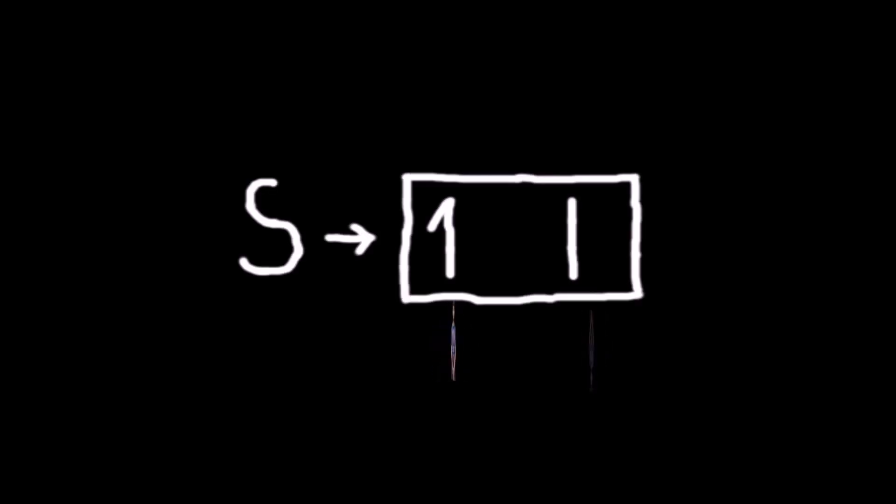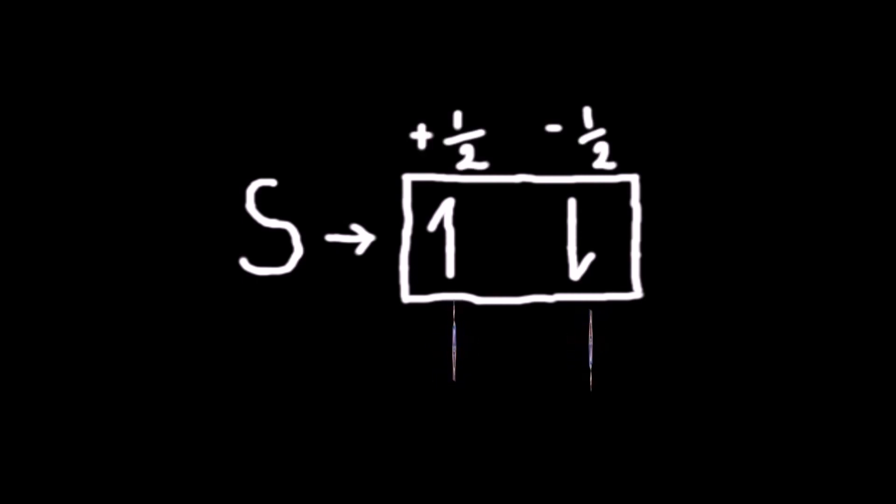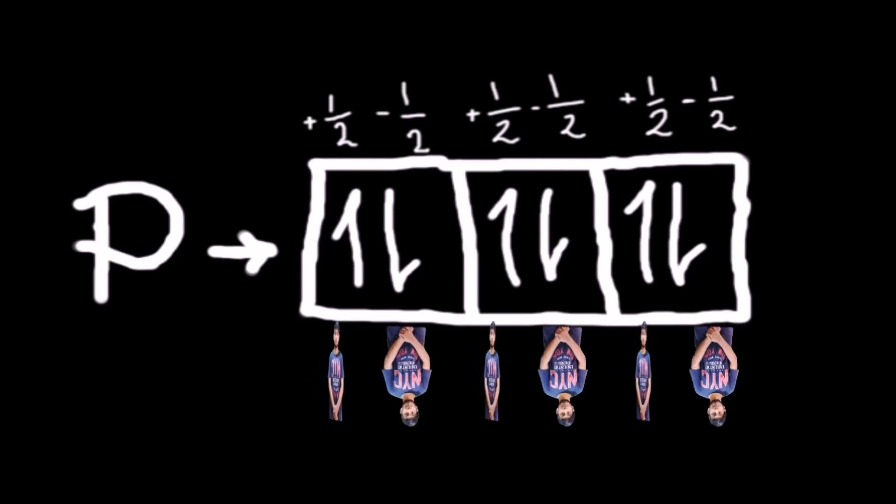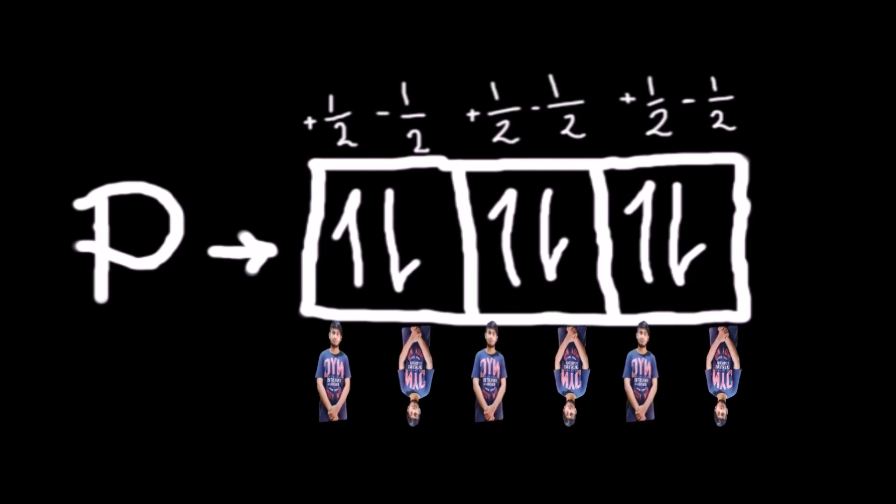In quantum mechanics, at higher energy levels, electrons exist in pairs. Each electron has spin +1/2 (spin up) or -1/2 (spin down). For example, at the s energy level (1 orbital), there are 2 electrons — one with spin +1/2 and one with spin -1/2. At the p energy level (3 orbitals), there are 6 electrons; each orbital has 2 electrons with spins +1/2 and -1/2 respectively.